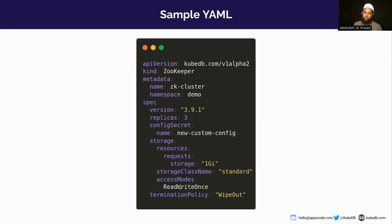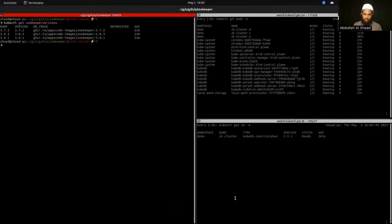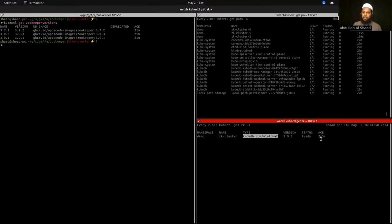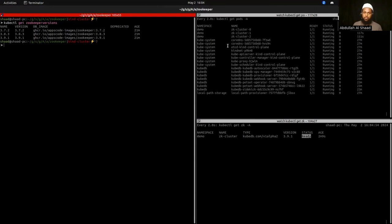In the storage section, we request one gigabyte of storage. The storage class name is `standard`, which is the default storage class in the kind cluster I'm using. The access mode is ReadWriteOnce. For demo purposes I'm using the WipeOut termination policy — I encourage you to explore other termination policies for production-grade ZooKeeper.